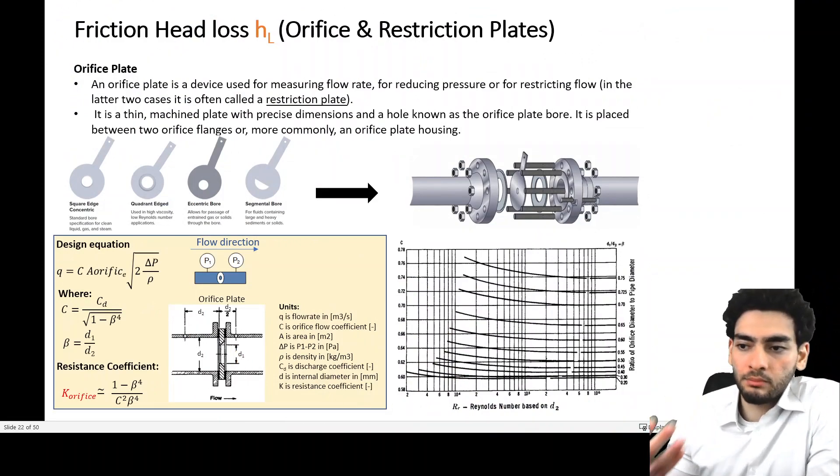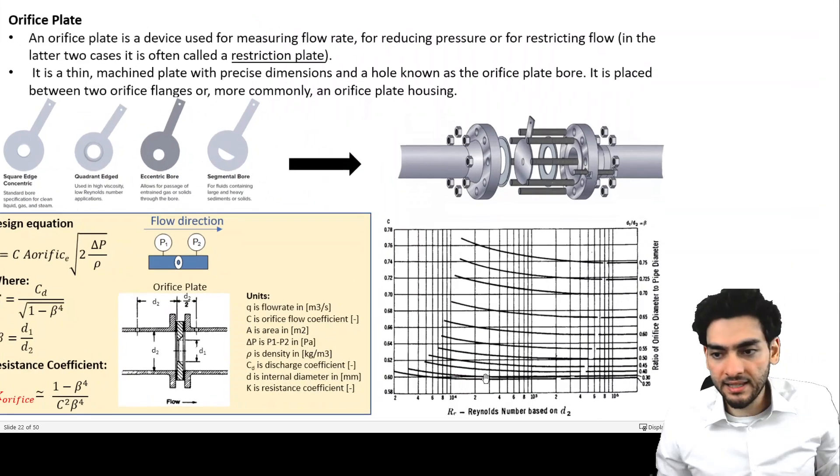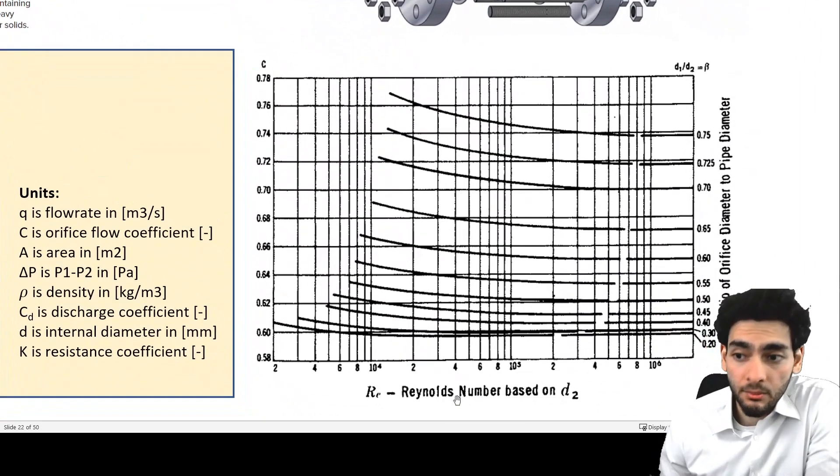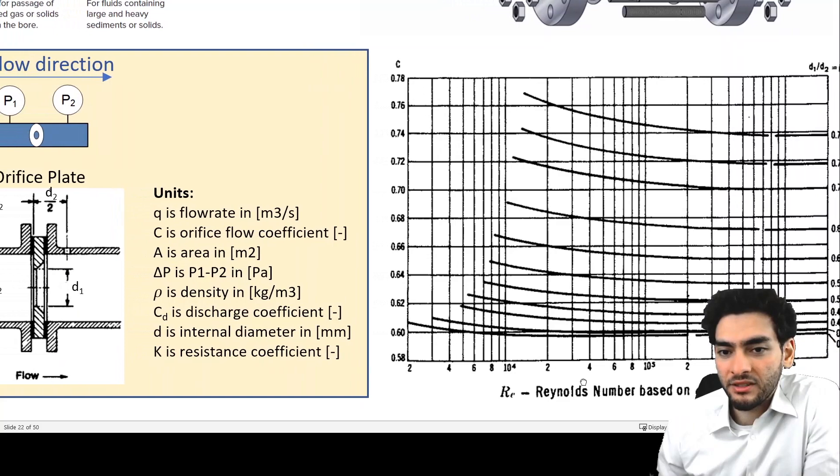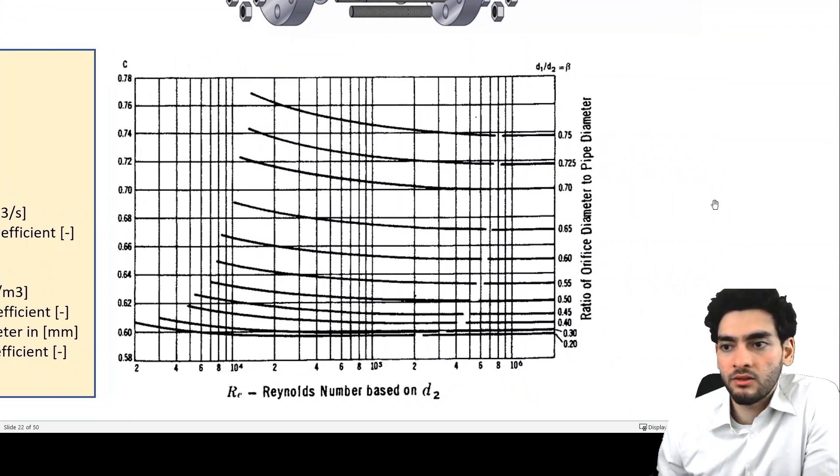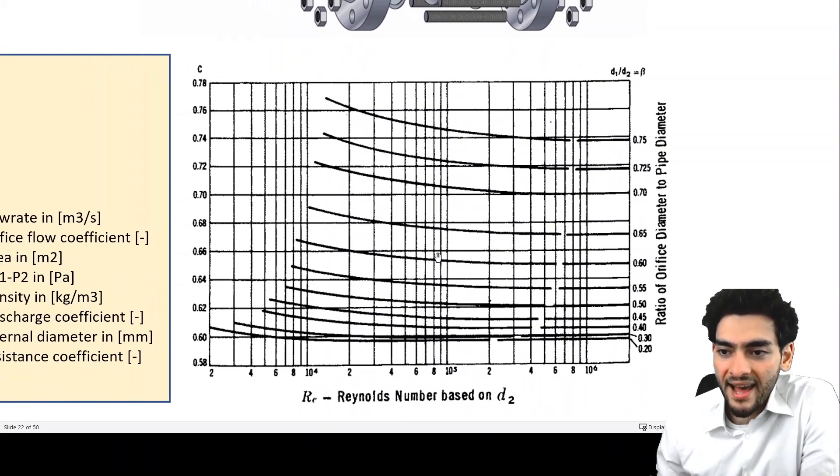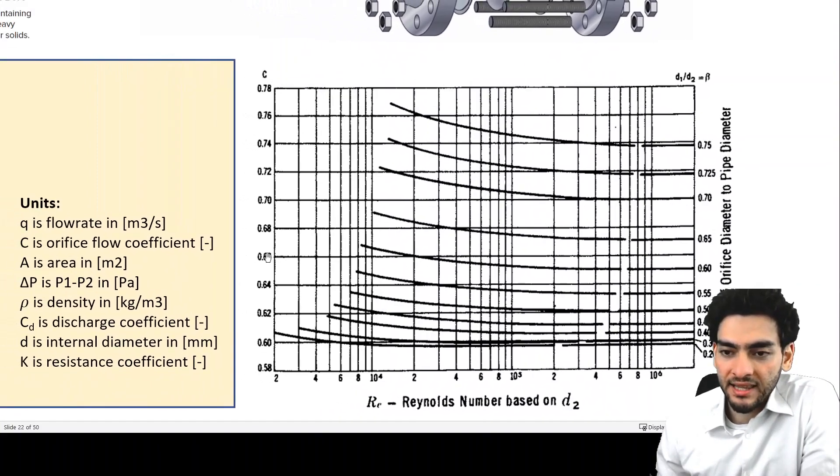The orifice flow coefficient is a function of the Reynolds number based on the diameter of the pipe on the x-axis. On the curves, you have beta, which is the ratio of the orifice diameter to the pipe diameter. Where you land, you're going to read the y-axis on the left-hand side.